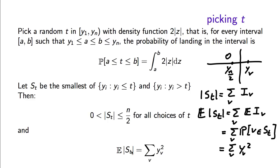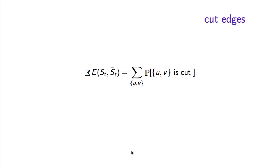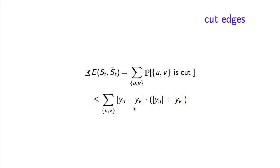The slightly more complicated part of the argument is computing the expected number of edges cut. By a similar argument, we write it as a summation over edges of the probability that the edge is cut. This probability can be upper bounded, which is perhaps the trickiest part of the argument.